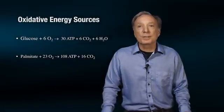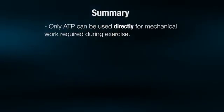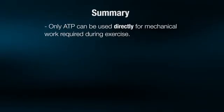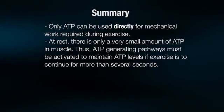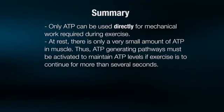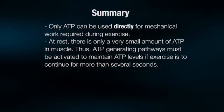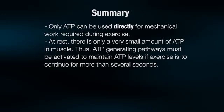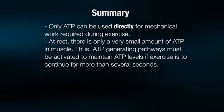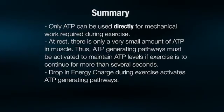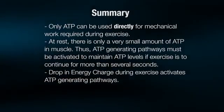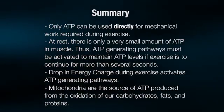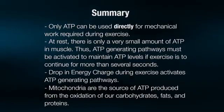In summary, only ATP can be used directly for mechanical work required during exercise. At rest, there is only a very small amount of ATP in muscle. Thus, ATP-generating pathways must be activated to maintain ATP levels if exercise is to continue for more than several seconds. The drop in energy charge during exercise activates ATP-generating pathways. Mitochondria are the source of ATP produced for the oxidation of our carbohydrates, fats, and proteins.